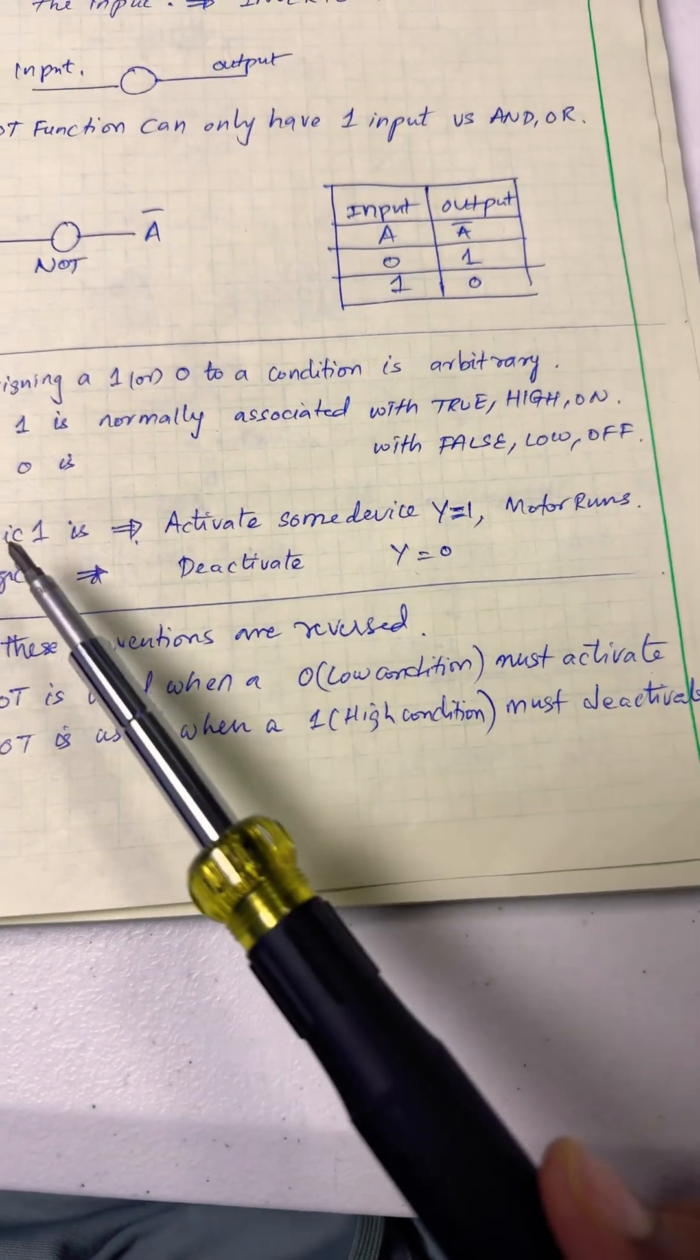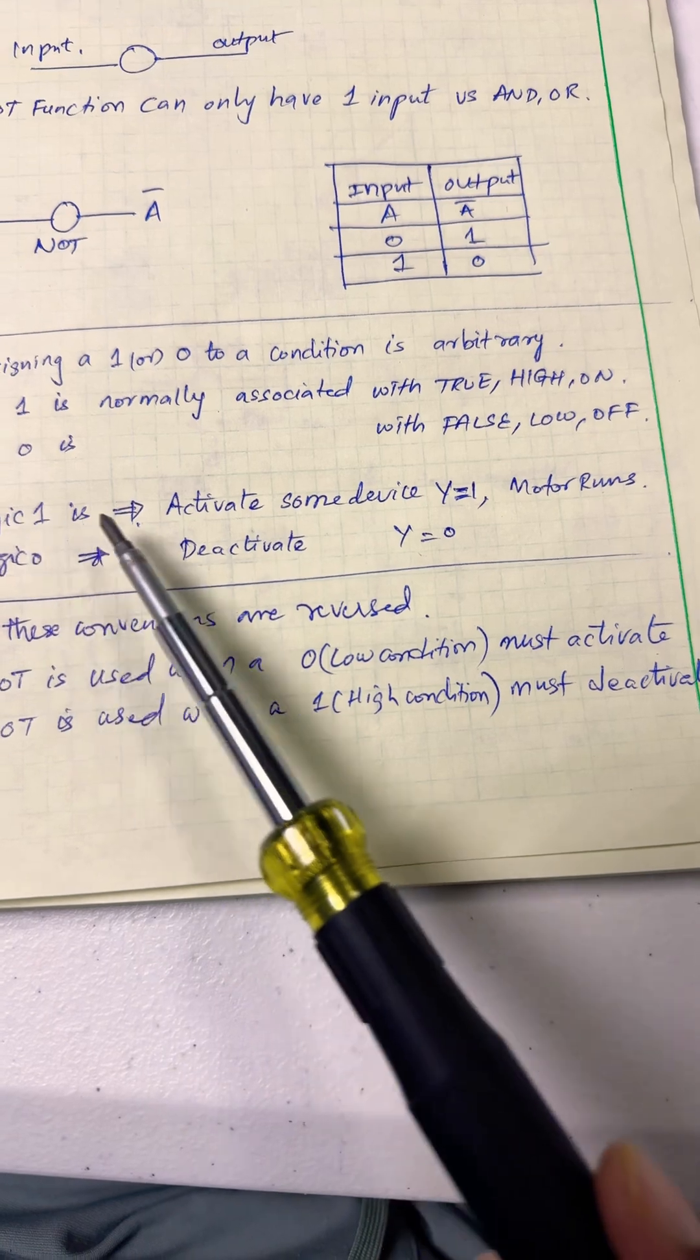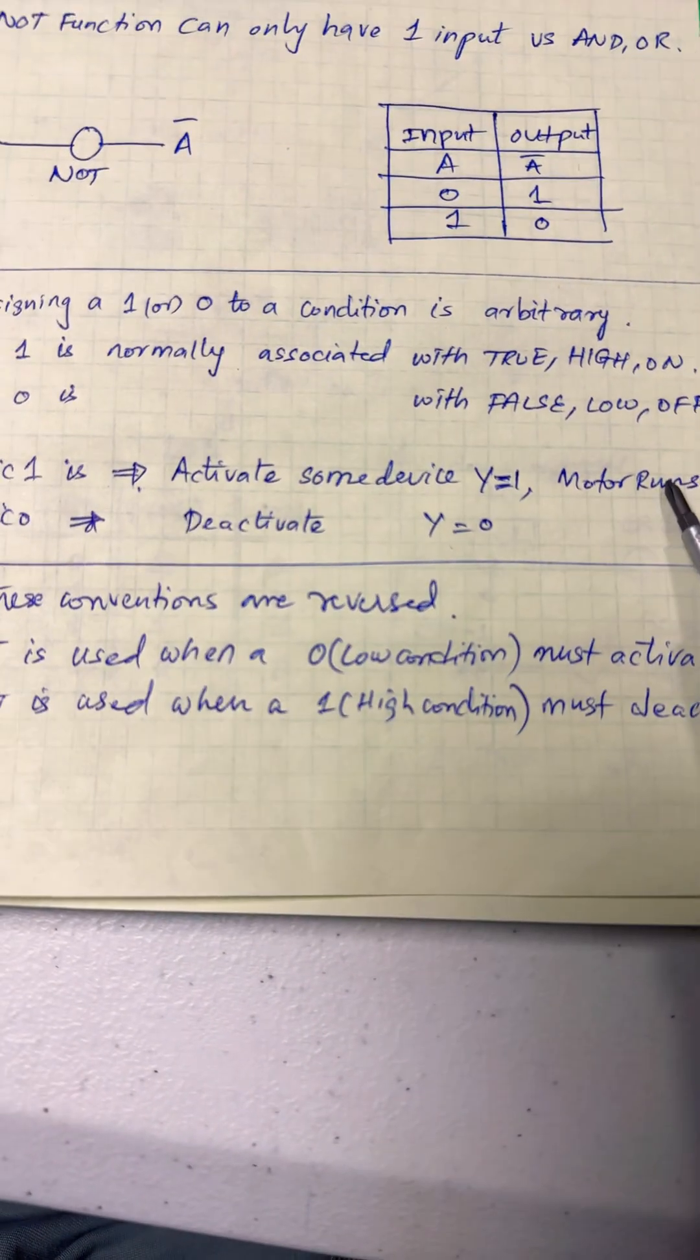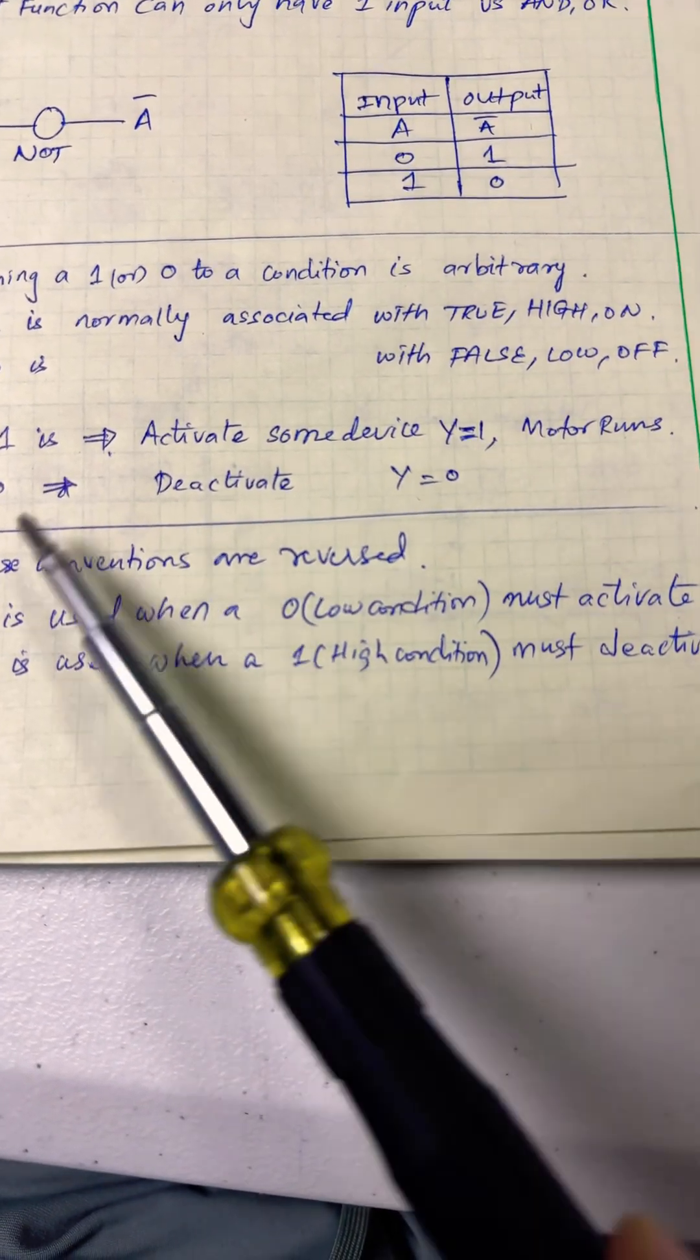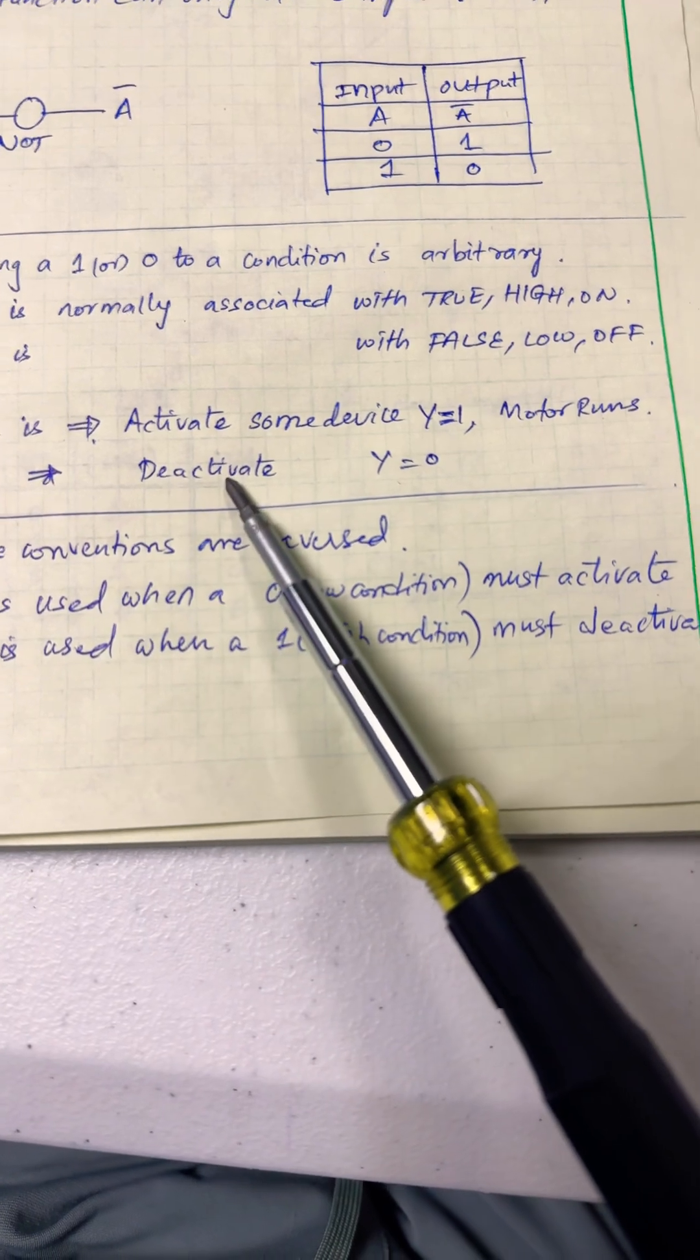For example, in our logic, logic one activates some device like a motor turning on, and logic zero is to deactivate the same motor, then Y equals zero.